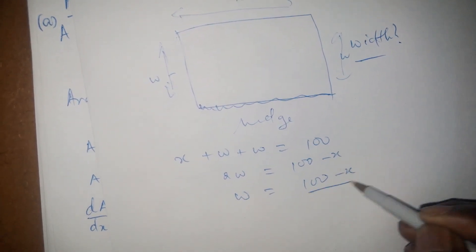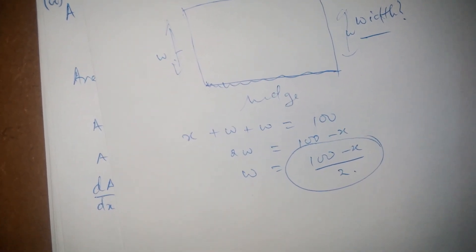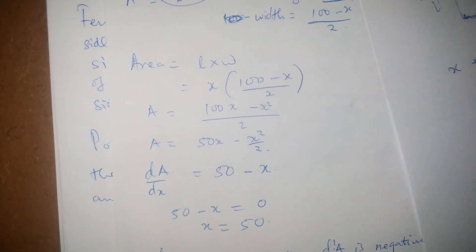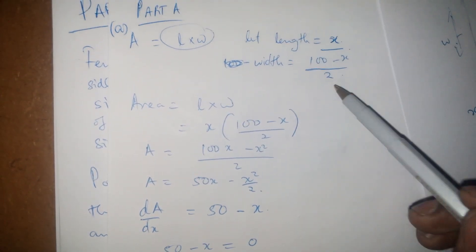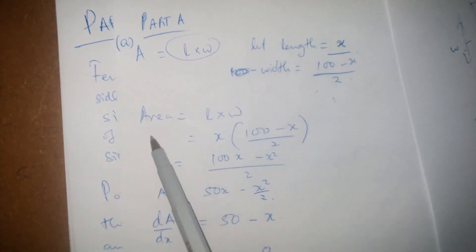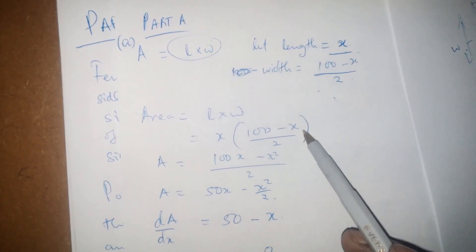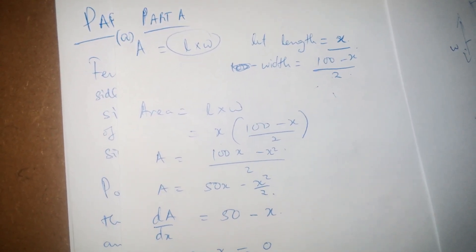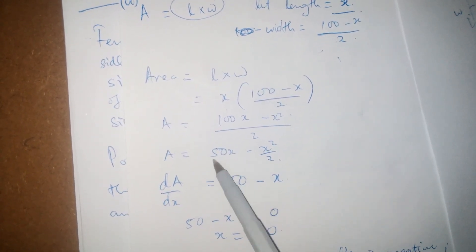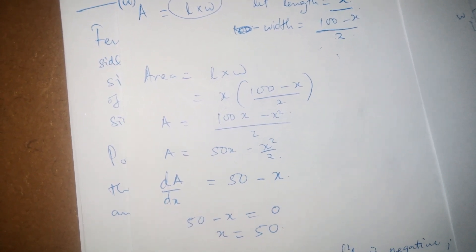So we have 2 × width = 100 − x, which gives width = (100 − x)/2. We bring this expression back into our area formula: Area = length × width = x × (100 − x)/2. Multiplying this out gives (100x − x²)/2, which simplifies to 50x − x²/2.